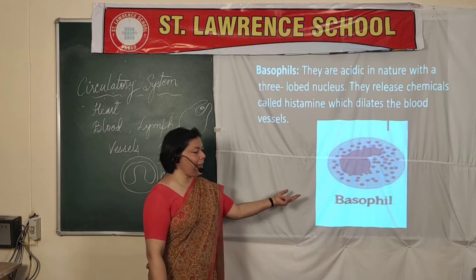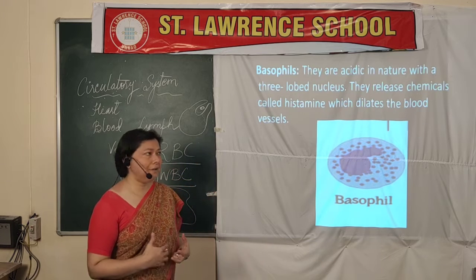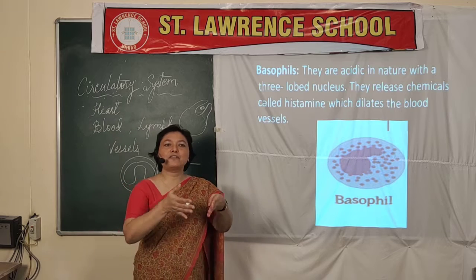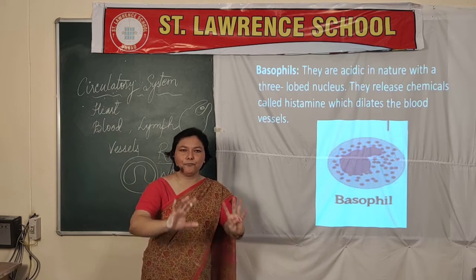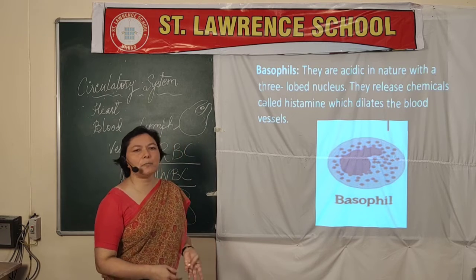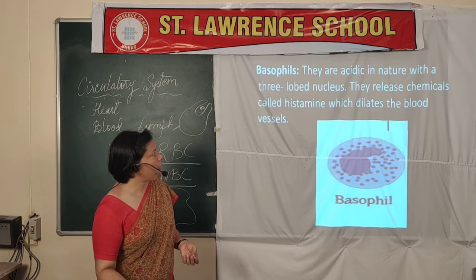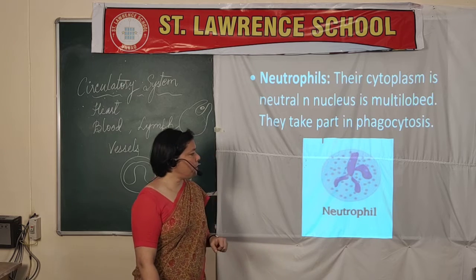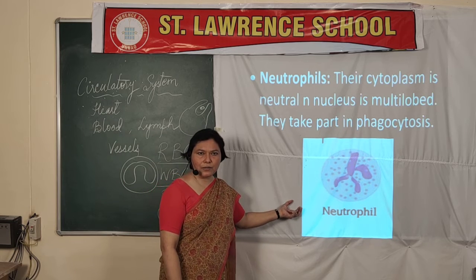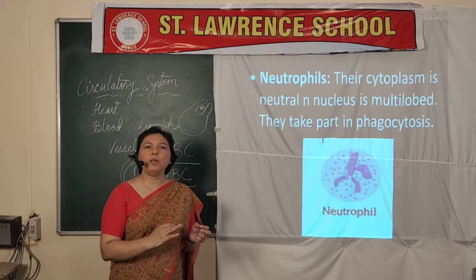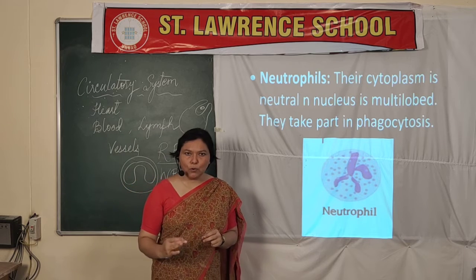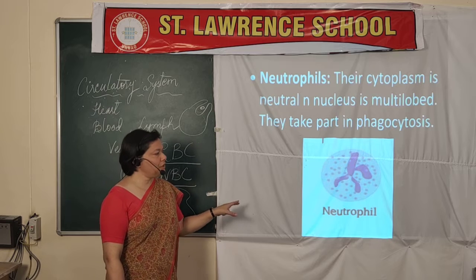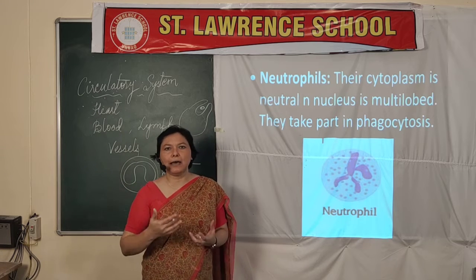The next is basophil. They are acidic in nature — always opposite to their name. Their main structure is a three-lobed nucleus. They dilate the blood vessels, meaning they expand the blood vessels so that blood can flow faster, and they secrete histamines which can cause anti-allergic conditions. The last is neutrophil — they have multi-lobed structures and take part in phagocytosis. All these WBCs are formed in the red bone marrow except lymphocytes, which are produced in the liver and spleen.